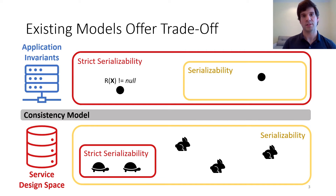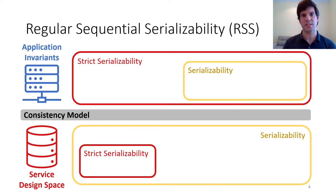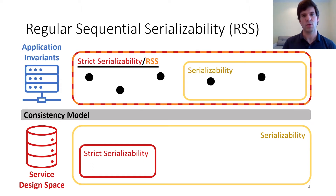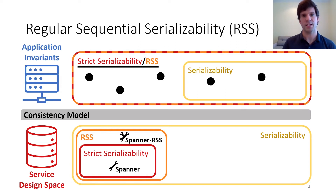Existing consistency models thus offer a trade-off: to get better performance, one must give up correctness. Our new consistency model aims to ease this trade-off. Regular sequential serializability is the first consistency model that is invariant equivalent to strict serializability. This means that invariants that hold with strict serializability will also hold with RSS. On the other hand, RSS opens up new service designs. For example, we'll show later how we can design a variant of Google's Spanner database that is allowed by RSS but not by strict serializability.